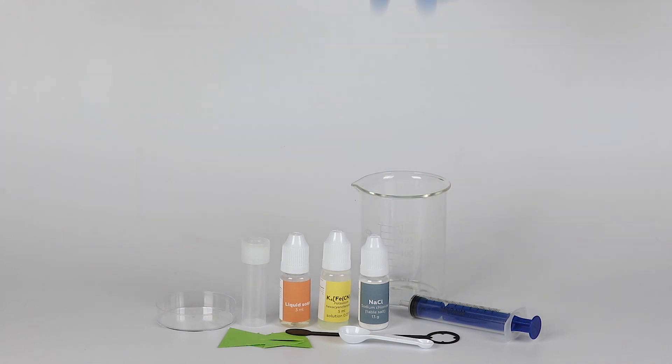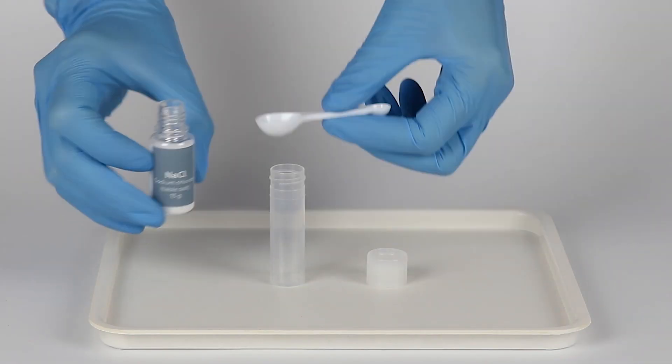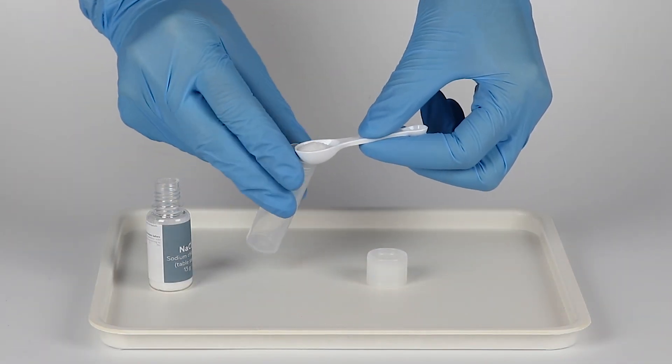Take a beaker from the starter kit and prepare some cold and hot water in advance. Add two big measuring spoons of sodium chloride to the plastic vial.